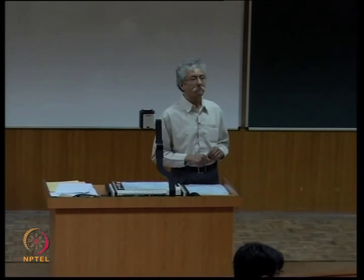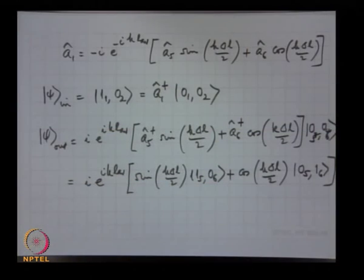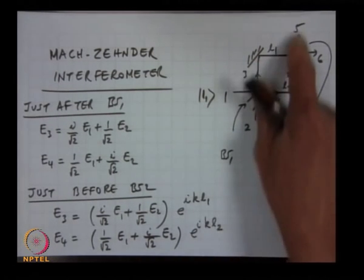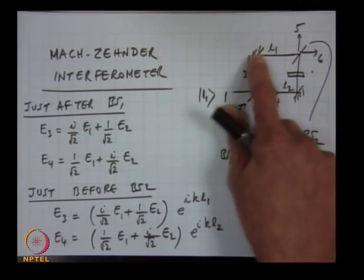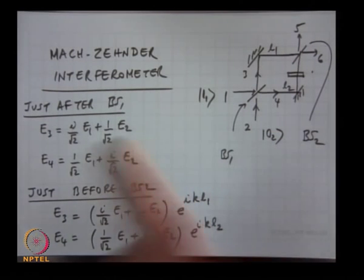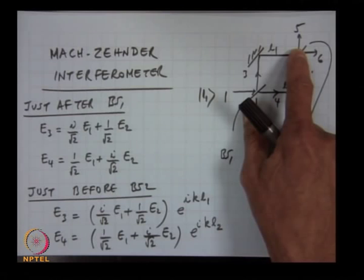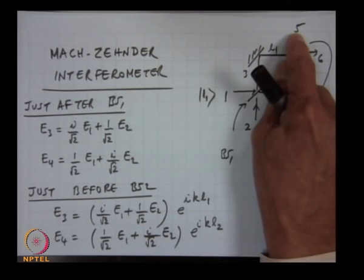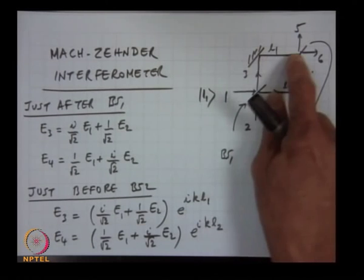A student asks: when ΔL = 0, why does the photon always come out of port 6? Because the photon can arrive at 5 or 6 along two indistinguishable paths, and since they are indistinguishable we must add the probability amplitudes before taking the mod square. When ΔL = 0, there is a π/2 phase shift from each reflection, so the amplitudes interfere destructively at port 5 and constructively at port 6. By changing the path length, one can reverse this — constructive in 5 and destructive in 6.